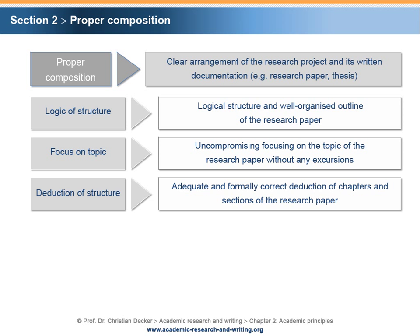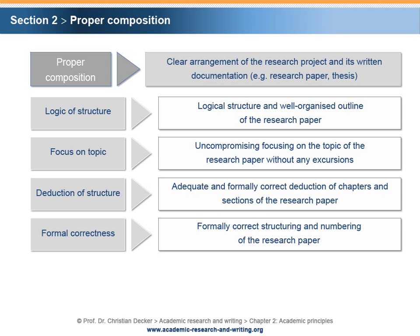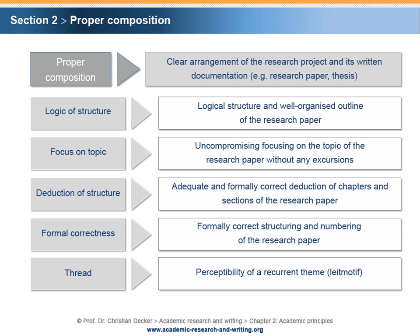Deduction of structure: proper composition implies an adequate and formally correct deduction of chapters and sections of the research paper. Formal correctness: proper composition implies a formally correct structuring and numbering of the research paper. Proper composition also implies the perceptibility of a recurring theme or leitmotif.